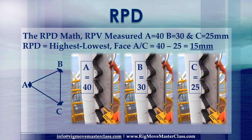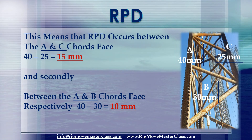The RPD math: RPV measured — A chord equals 40 mm, B chord equals 30 mm, and C chord equals 25 mm. RPD is the highest chord minus the lowest chord. Face AC: 40 mm minus 25 mm equals 15 mm. Between the A and B chord face respectively: 40 mm minus 30 mm equals 10 mm. Conclusion: whichever two chords measure the greatest RPV values between them gives us the rack phase difference for that particular leg. RPD occurs between the A and C chord face: 15 mm.